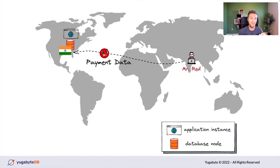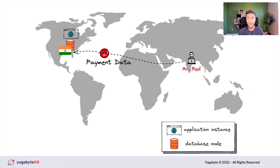Europe is not alone when it comes to data privacy. In India, the Reserve Bank of India put in place a law that requires keeping all payment data of Indian residents and citizens in India. This means that if in our Slack-like messenger we introduce features like money transfers from Mr. Red to Mrs. Blue or Mr. Green, all payment transactions can be processed in the United States, but the payment data — transfers, deposits, credits — must reside in India.